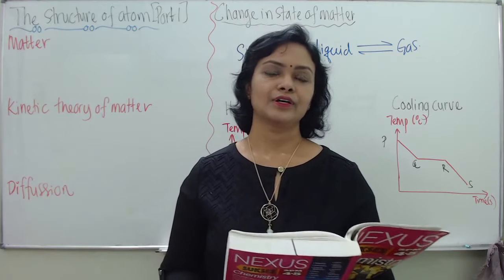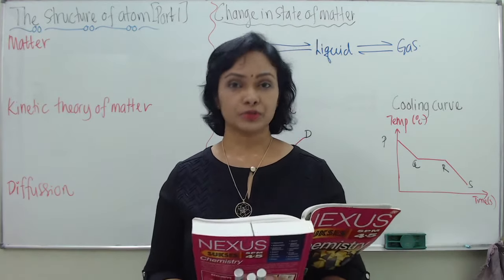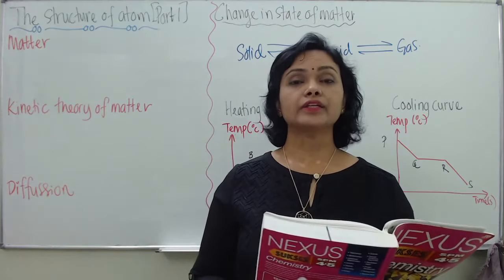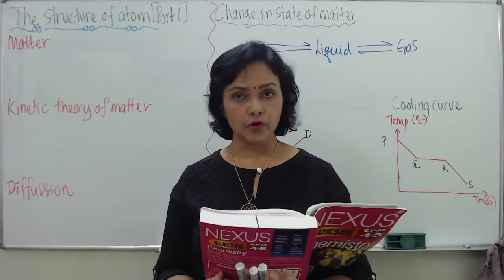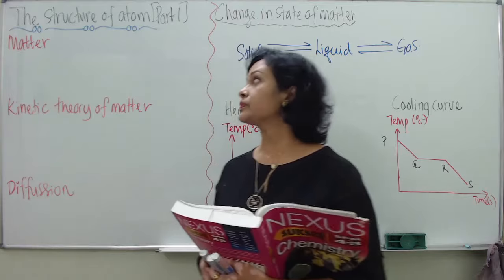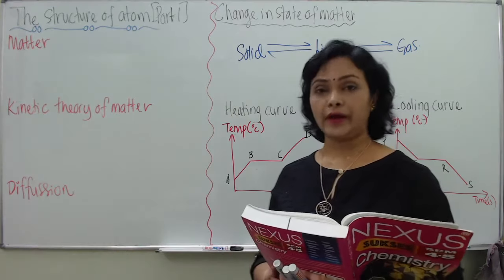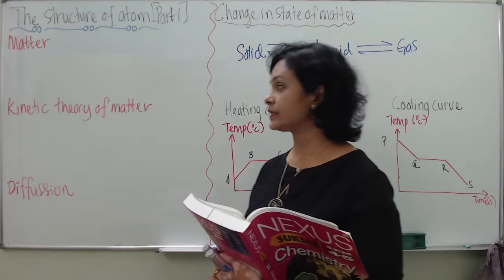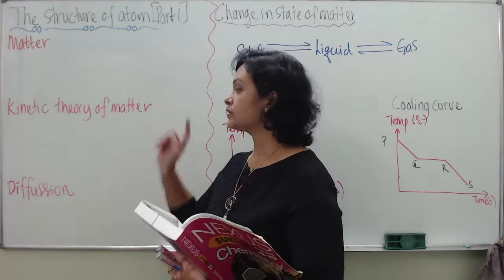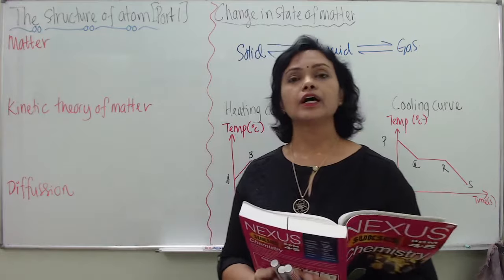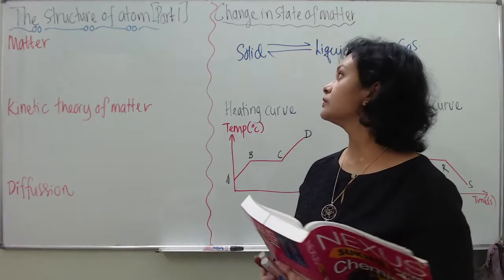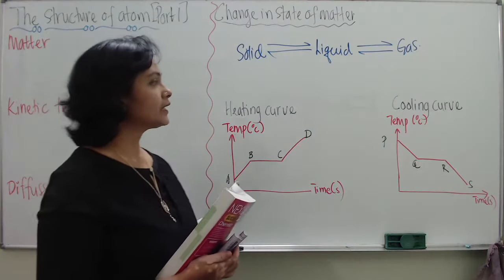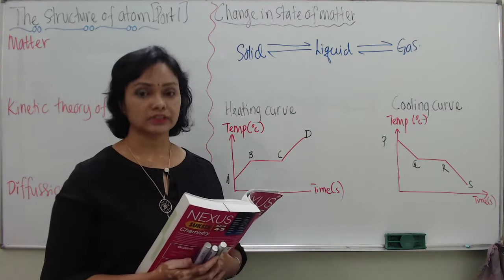Hello, good day to all my Form 4 students. Today we are here to look at Chapter 2 Form 4. The chapter is called the Structure of Atom Part 1, and teacher is going to discuss matter, kinetic theory of matter, the meaning of diffusion, changes of matter, and also the heating and cooling curve of a substance.